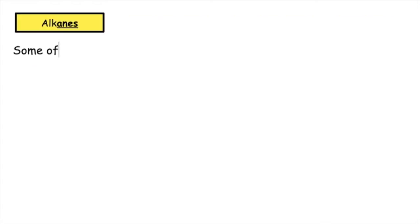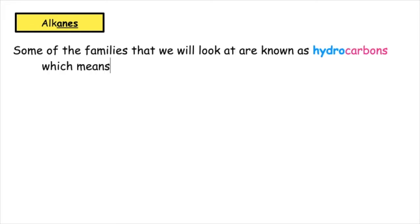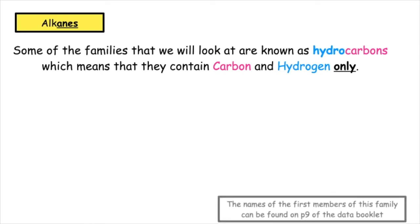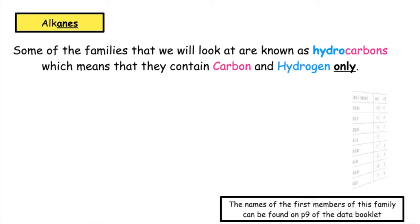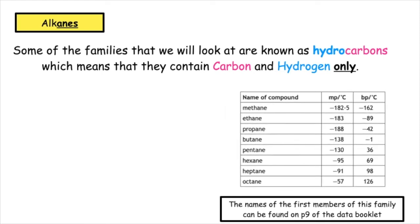Some of the families that we will look at are known as hydrocarbons, which means that they contain carbon and hydrogen only. The names of the first members of this family can be found on page 9 of the data booklet.